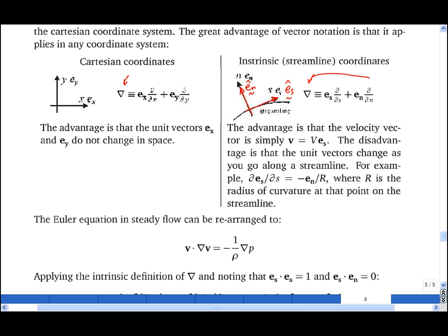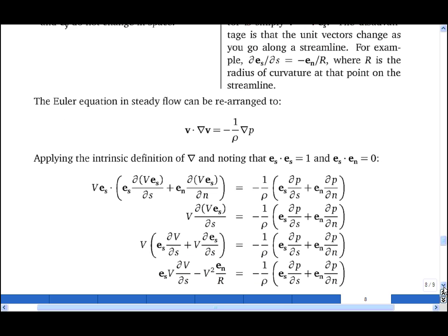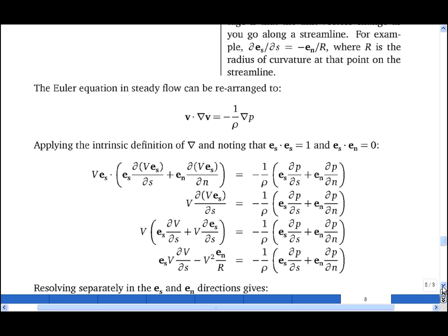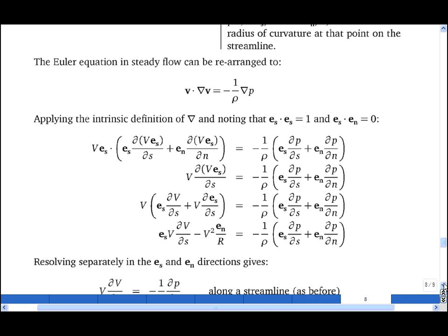I then apply the intrinsic definition of del and note that a unit vector dotted with itself is 1 and Es·En in this case is equal to 0. I won't go through the lines of algebra.